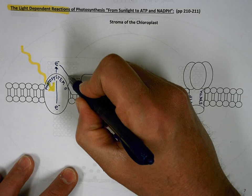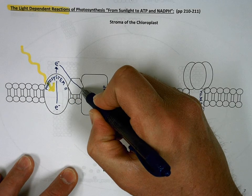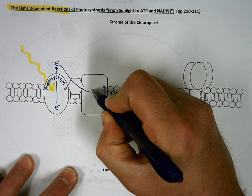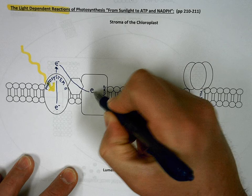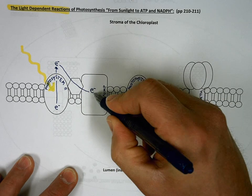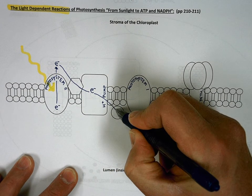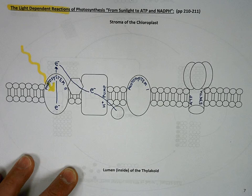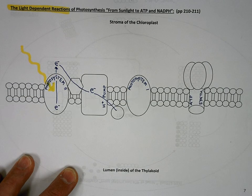It then gets passed along this electron transport system through this hydrogen ion pump down to this mobile carrier. As we know, when electrons pass through hydrogen ion pumps, hydrogen ions are pumped.